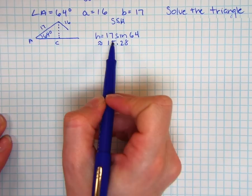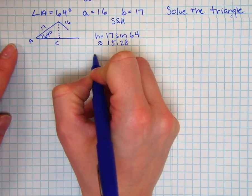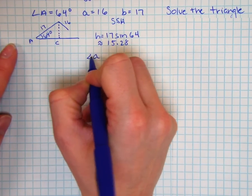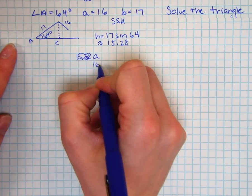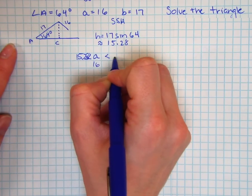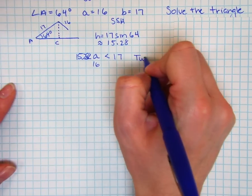And since side A is greater than 15.28, that is side A is 16, and it is less than 17, we have two triangles here.